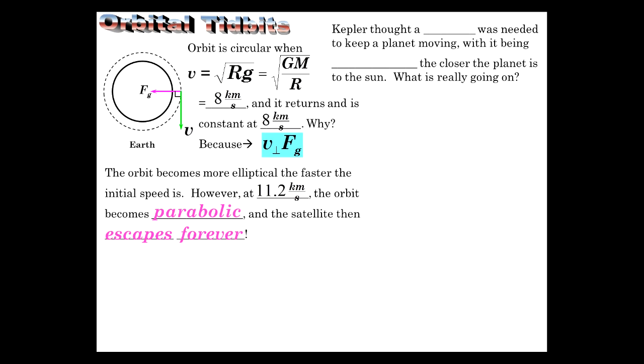Now, Kepler thought a special force was needed to keep the planet moving, and that force is probably greater the closer the planet is to the Sun, because it's moving faster there. Kepler really didn't know the dynamics of motion so much, what causes motion. He was a very good mathematician, and he understood the description of motion, came up with his three laws. Newton informed us more about the underlying cause of all this. But what's really going on with an orbit, with a planet going around the Sun?